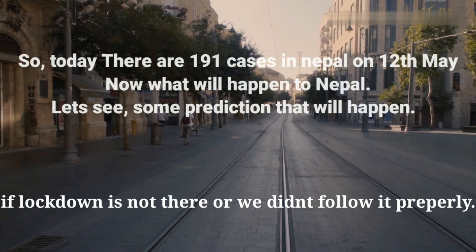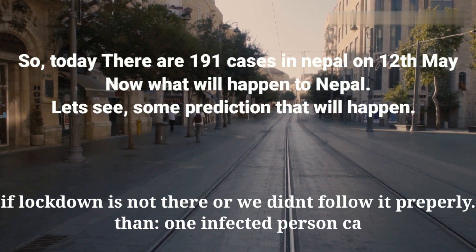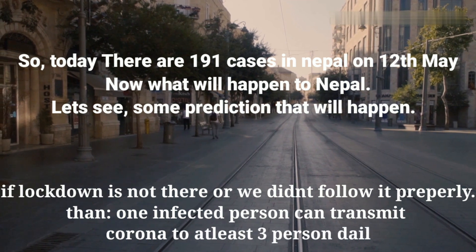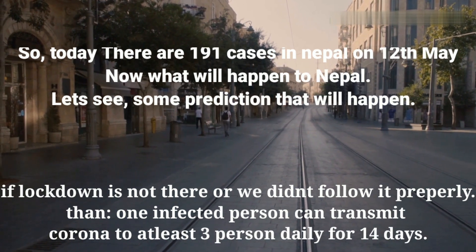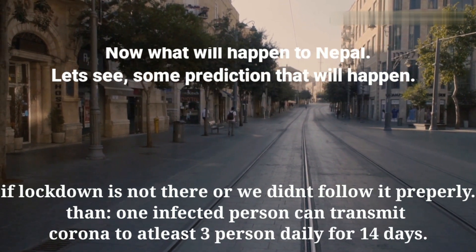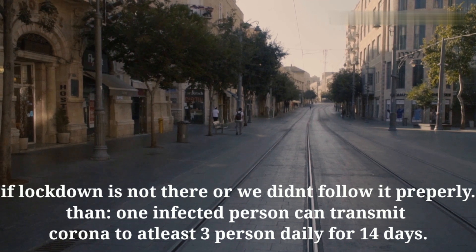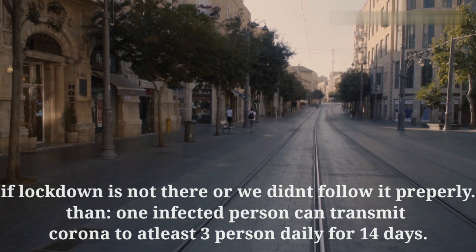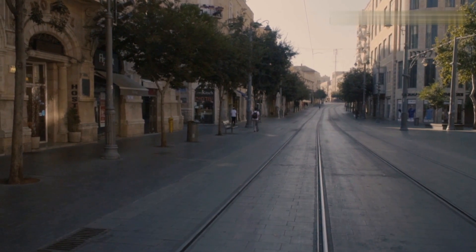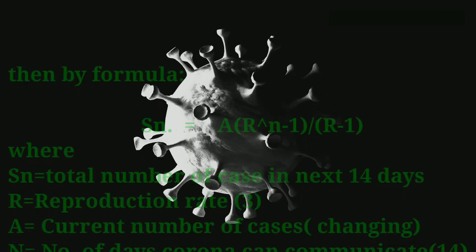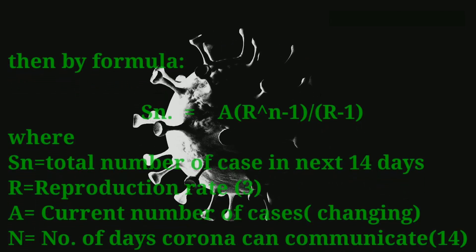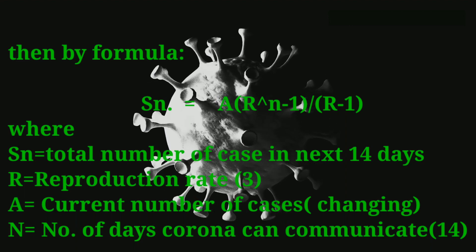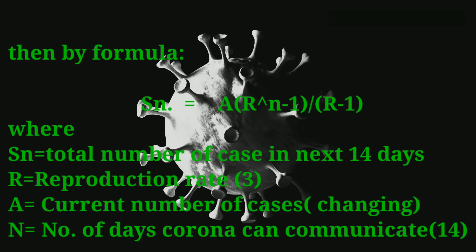Now let's see what will happen in Nepal in the next 14 days if lockdown was not there and we didn't have to follow any rules — if we could go out and meet random people. In that case, one person affected by corona could infect three other persons daily. Using the simple formula of geometric progression, where SN means total number of cases in the next 14 days, and A is the current number of cases.